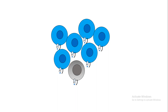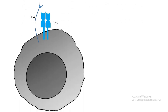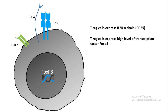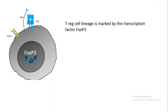The mechanism by which some CD4 positive cells become T regulatory cells is not fully clear, but there are some insights. Apart from the TCR and CD4 co-receptor, T regulatory cells express high levels of interleukin-2 receptor alpha chain. They also express the transcription factor FOXP3, a member of the forkhead family, and maintain high levels of this transcription factor. FOXP3 is the lineage marker for T regulatory cells and is known as the master regulator that converts a CD4 positive T cell to a T regulatory cell fate.